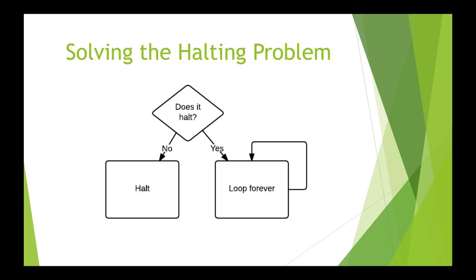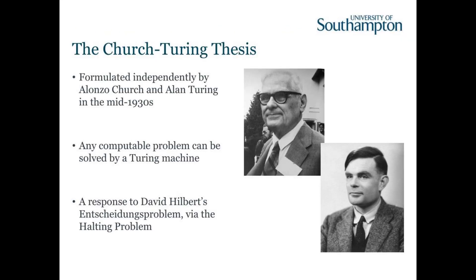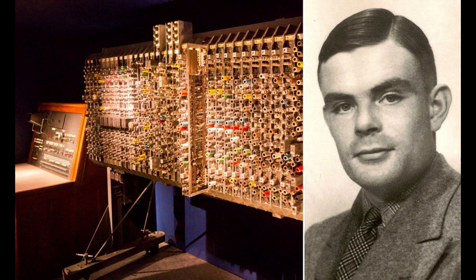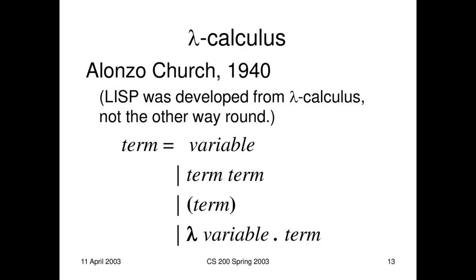The history of functional programming begins with the history of modern computing. In the 1930s, mathematicians debated whether electronic machines could detect if a program could terminate — a question now known as the halting problem. Alan Turing and Alonzo Church, two famous mathematicians, worked together to prove that this was impossible. Turing introduced the Turing machine to model computations, whereas Church introduced Lambda Calculus as a language to express mathematical computations that can be executed by the machine.